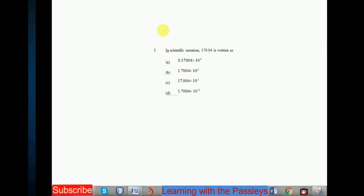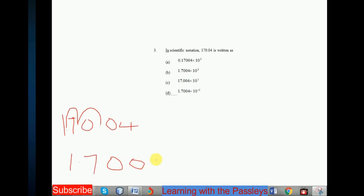So I am going to rewrite the number here. So 170.04. You see that? What I am going to do now is to move this decimal point two places on the left. So 1, 2. Now I can write 1.7004 times 10.